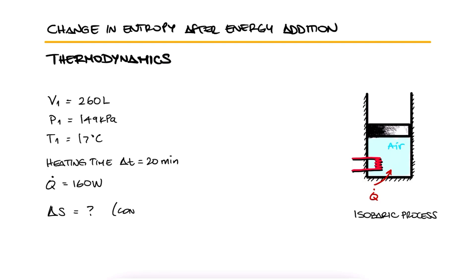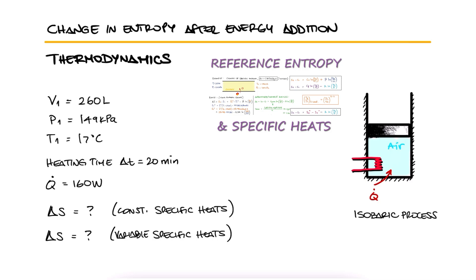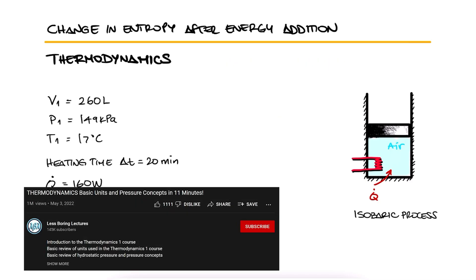Determine the entropy change of air assuming constant specific heats and variable specific heats. As usual, try pausing here to solve this problem yourself before watching the solution. This is the second example for the reference entropy and specific heats main lecture. The link to that 12-minute lecture and all the other examples and lectures of the thermodynamics course are found in the description below.